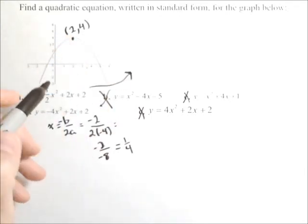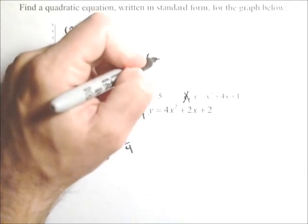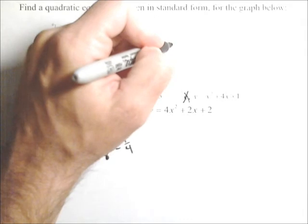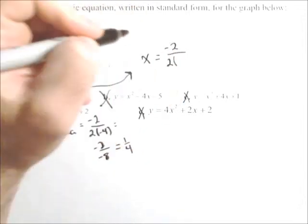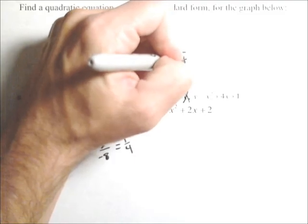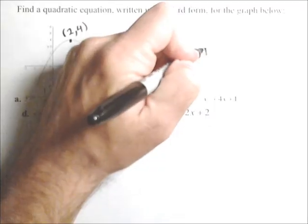This one, we'll apply the vertex formula. So negative b is negative two over two times a, which is negative one-half, so negative two over negative one, and we get two.